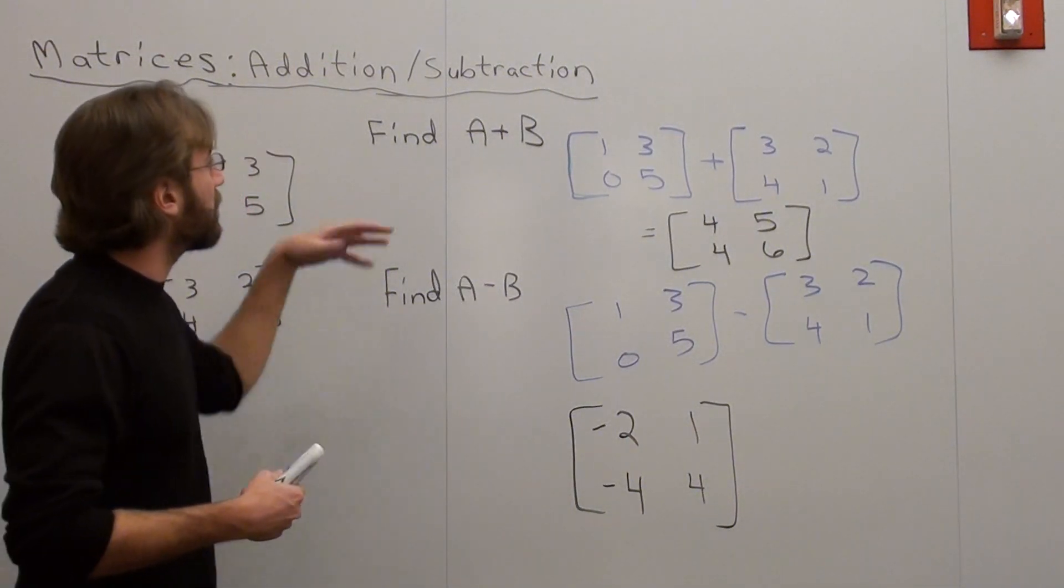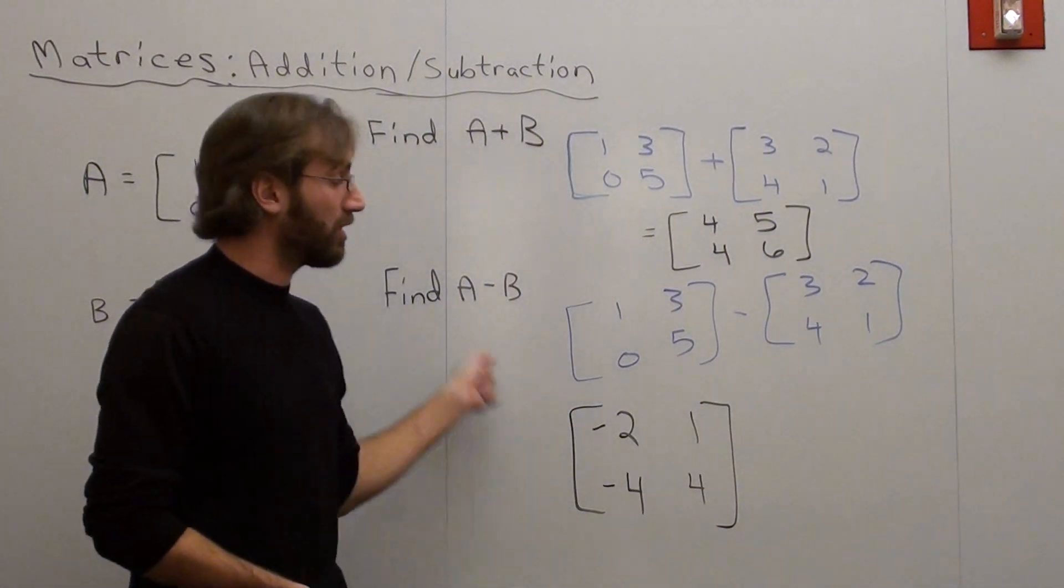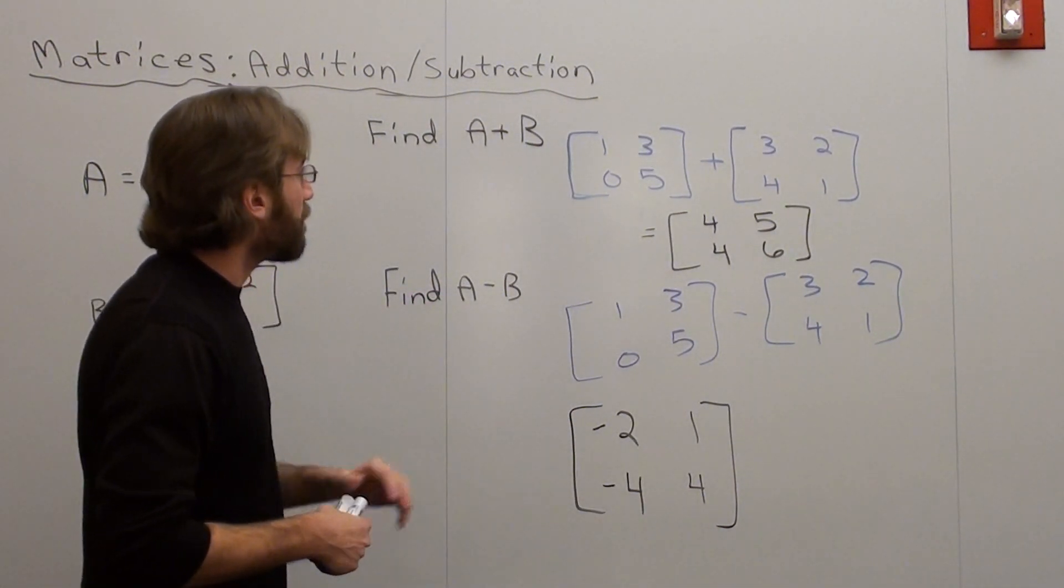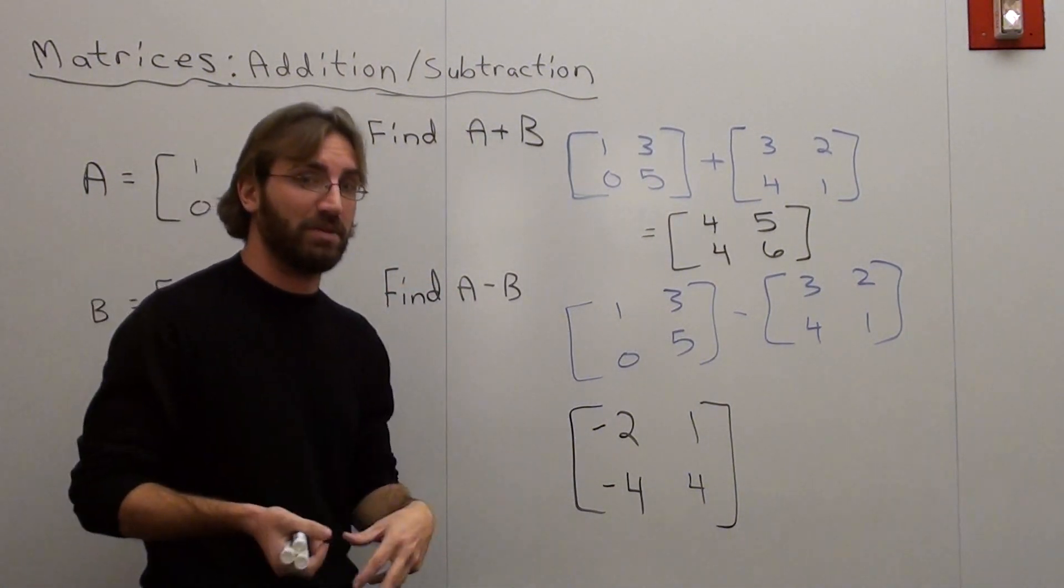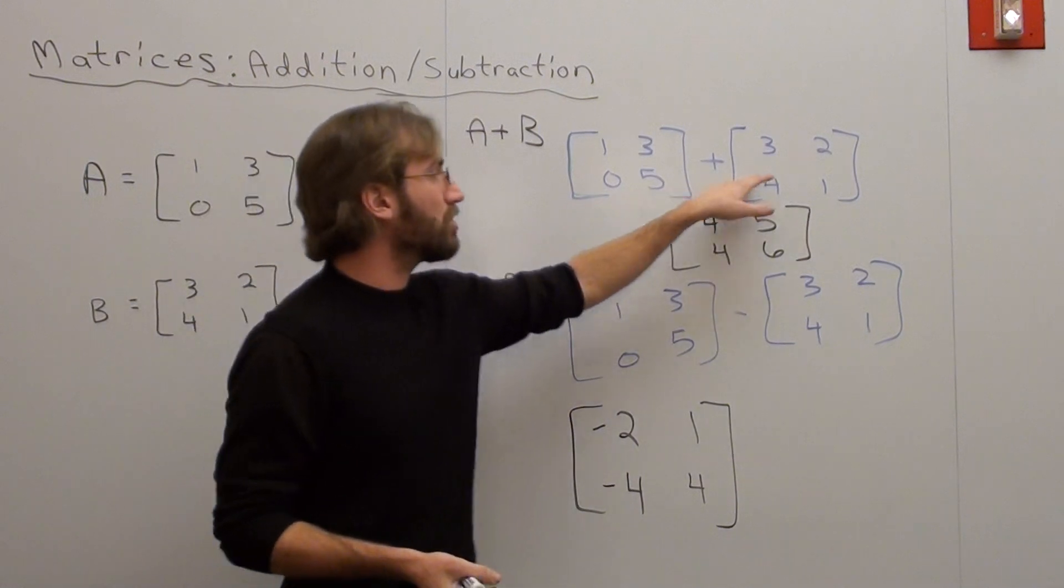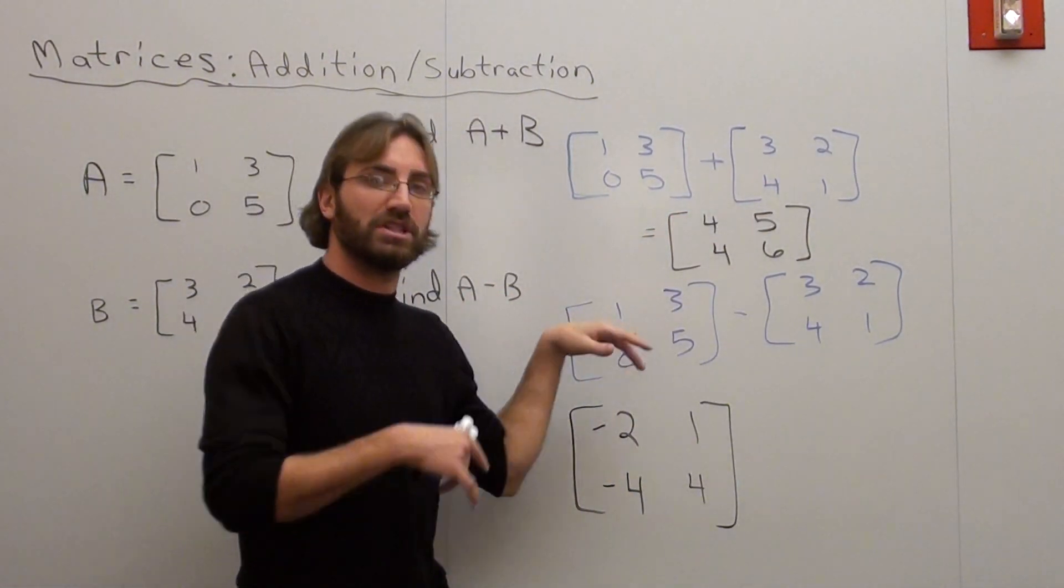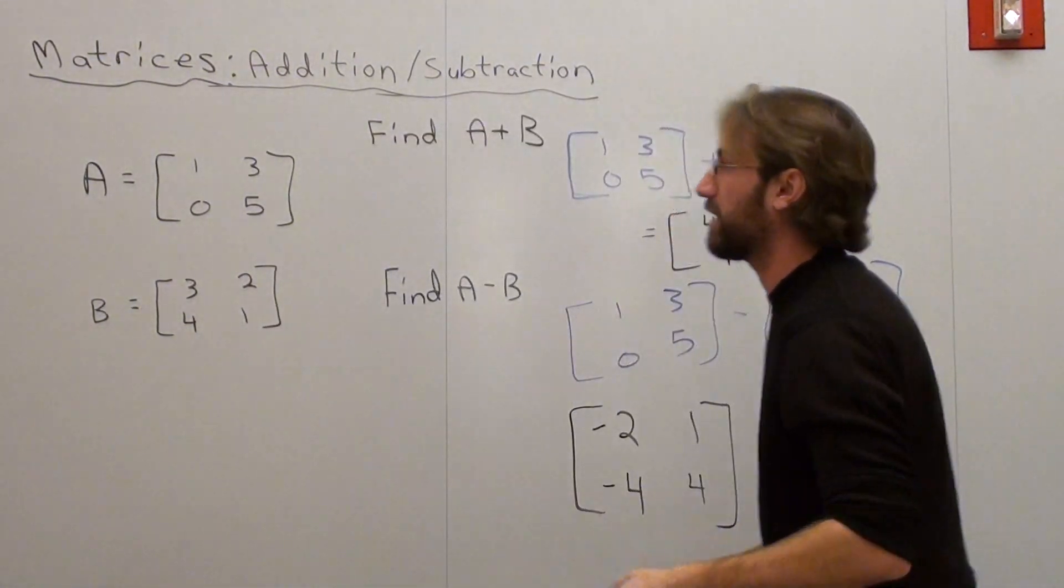That's pretty much it when it comes to adding and subtracting matrices. There is one thing that I have to mention. I'm going to erase these problems in order to explain it. You can add and subtract matrices as long as both of them have the same dimensions. This is a 2 by 2, and it's a 2 by 2. So you can add and that's fine. You can subtract these matrices because it's a 2 by 2 and a 2 by 2. Fine. Let's try something a little bit different.